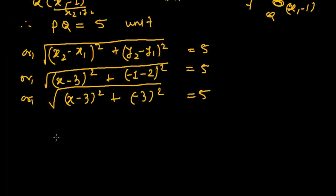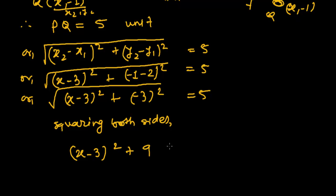Or (x - 3)² + (-3)² = 5. And now just I am squaring both sides. Squaring both sides. In roots problem we generally square. What we will get squaring both sides. If I will square both sides, it will be now, the root will be removed. So (x - 3)² + (-3)² = 9, equals to 5², that is 25.